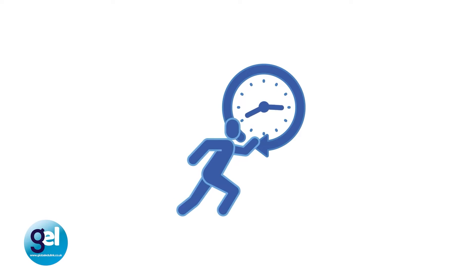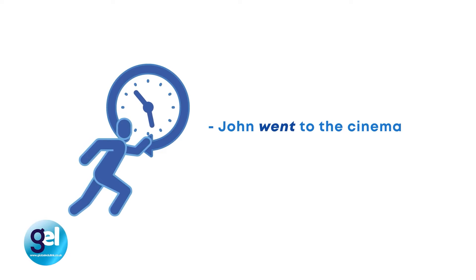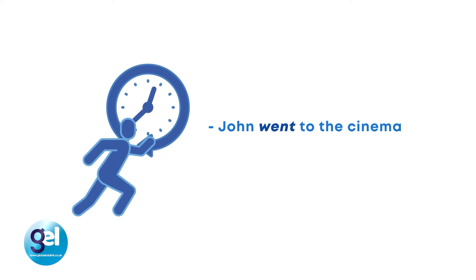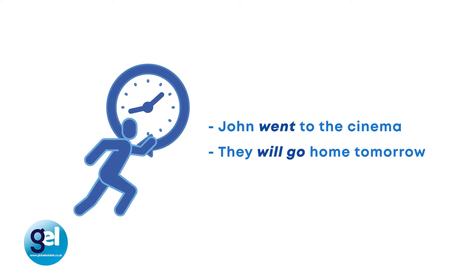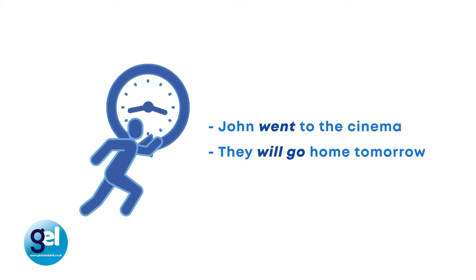Let's have a look at some examples. 'John went to the cinema.' If we look at the verb in this sentence we can see it's the past tense of 'go.' Another example: 'They will go home tomorrow.' We can see 'will' is an example of the future simple tense. At a simple level we can describe verbs as an action or a state, and there are many different types of verbs which we will look through.